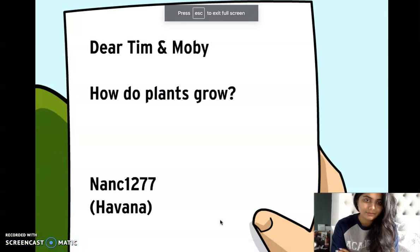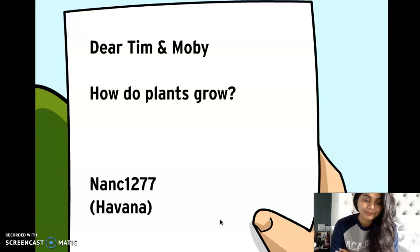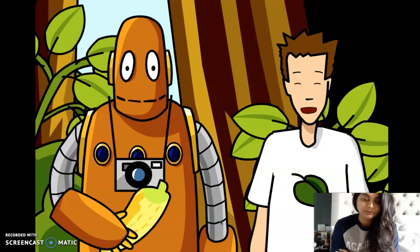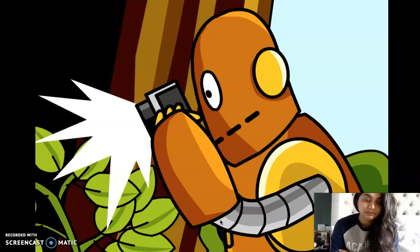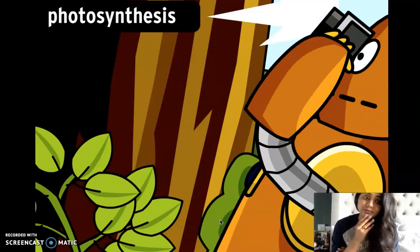Dear Tim and Moby, How do plants grow? From Nance1277. All living things need nourishment to grow, but plant food is different from people food. Plants make their own food in a process called photosynthesis.